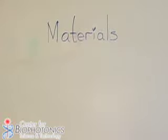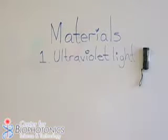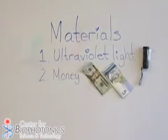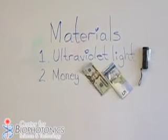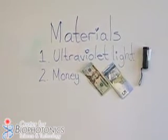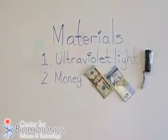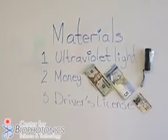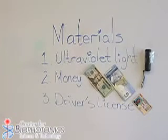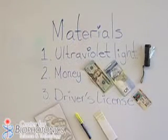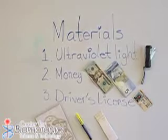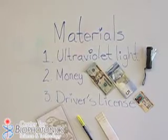The materials you'll need today include a black light or ultraviolet light — both are the same thing — money, US money, especially the newest money, has more color in it, but foreign money can be even more colorful. You'll also need some form of identification like a driver's license, credit cards, and some items that you may not have at home, including fluorescent paints and invisible ink.